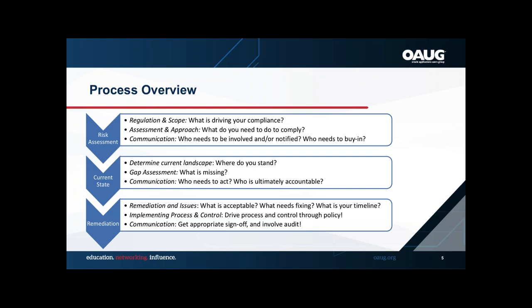Our process overview starts with risk assessment: what's your regulation and scope, what's driving your compliance, and what's your approach to scoping? Then there's the communication piece, which I think is the most important and often gets neglected. Being proactive is key — understanding who needs to be involved, making sure they're notified and brought in. You may be familiar with RACI matrices, which help stratify within your organization who needs to know what.